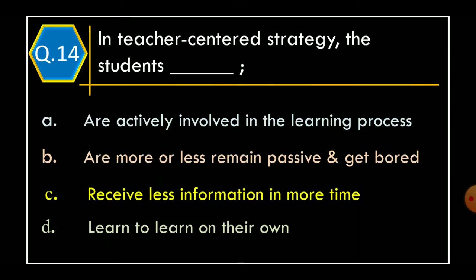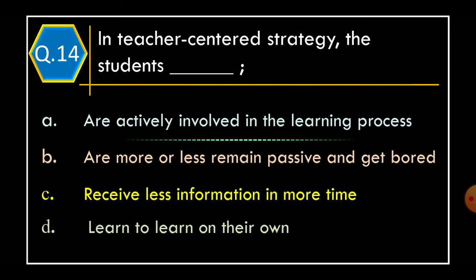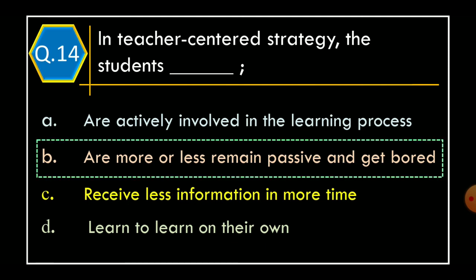Question 14. In teacher centred strategy the students: Option A – Are actively involved in the learning process. Option B – Are more or less remain passive and get bored. Option C – Receive less information in more time. Option D – Learn to learn on their own. The correct option is Option B: Are more or less remain passive and get bored.